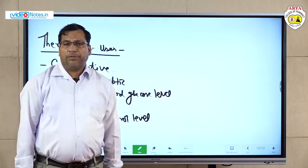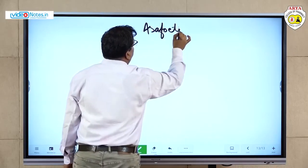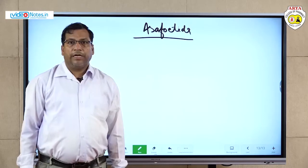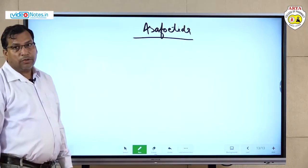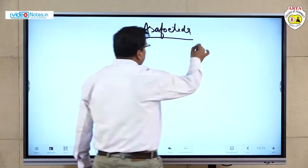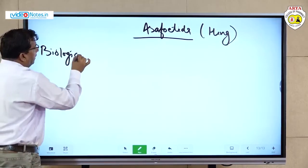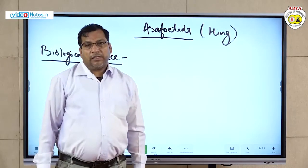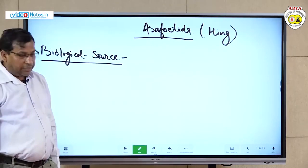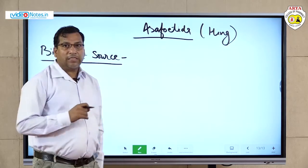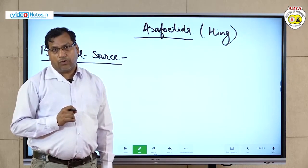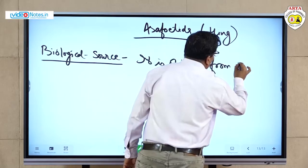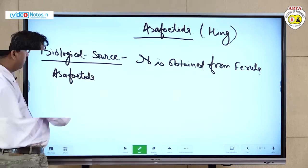Now we will discuss about asafoetida, also known as hing in Hindi. It is widely used in kitchen spices. The biological source: it is obtained from Ferula asafoetida by incision of the root and rhizomes of the Ferula asafoetida plant.